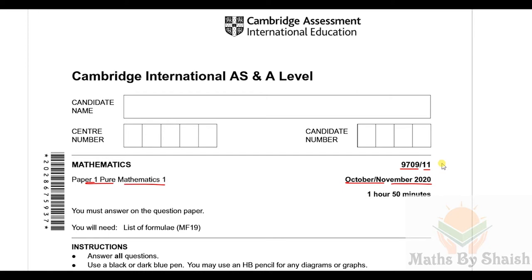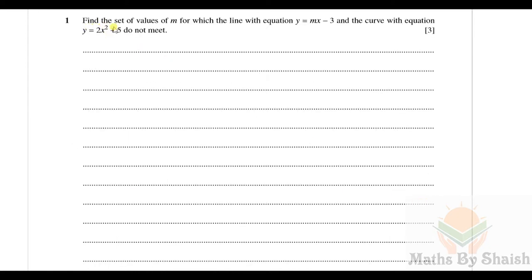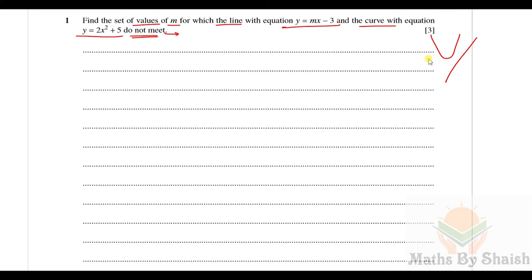Here is question number one: find the set of values of M for which the line with equation y = mx − 3 and the curve with equation y = 2x² + 5 do not meet. Since they form a quadratic equation and 'do not meet' means no solution, if they don't meet the discriminant is going to be less than zero — no real solution.